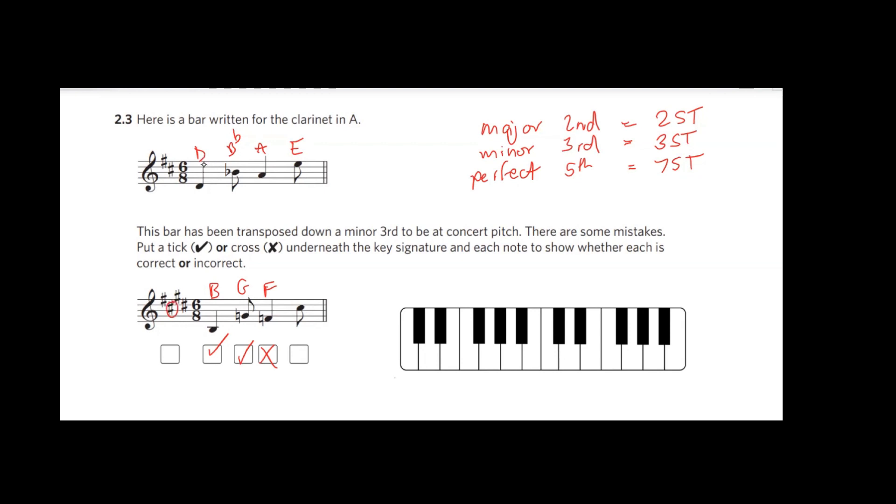And then E moving down to C sharp. Be very careful that you don't miss your key signature when you're labeling your notes - that's one of the most surefire ways to lose points on this question. Okay, C sharp - E moving down one, two, three - yes, that's correct as well.